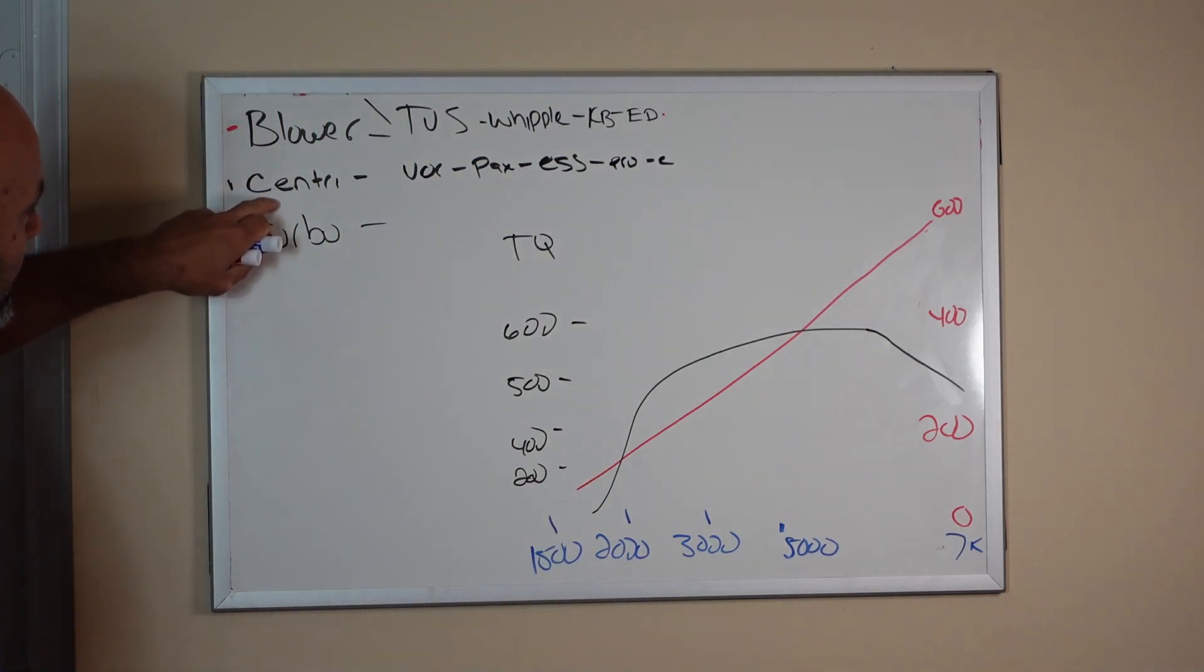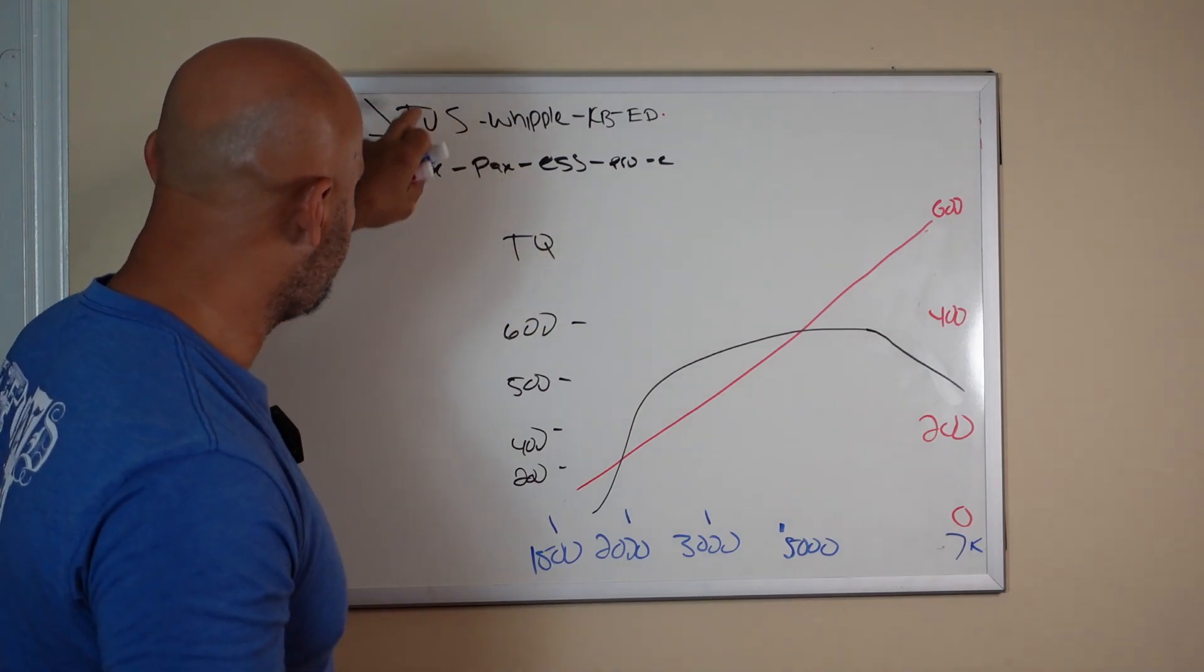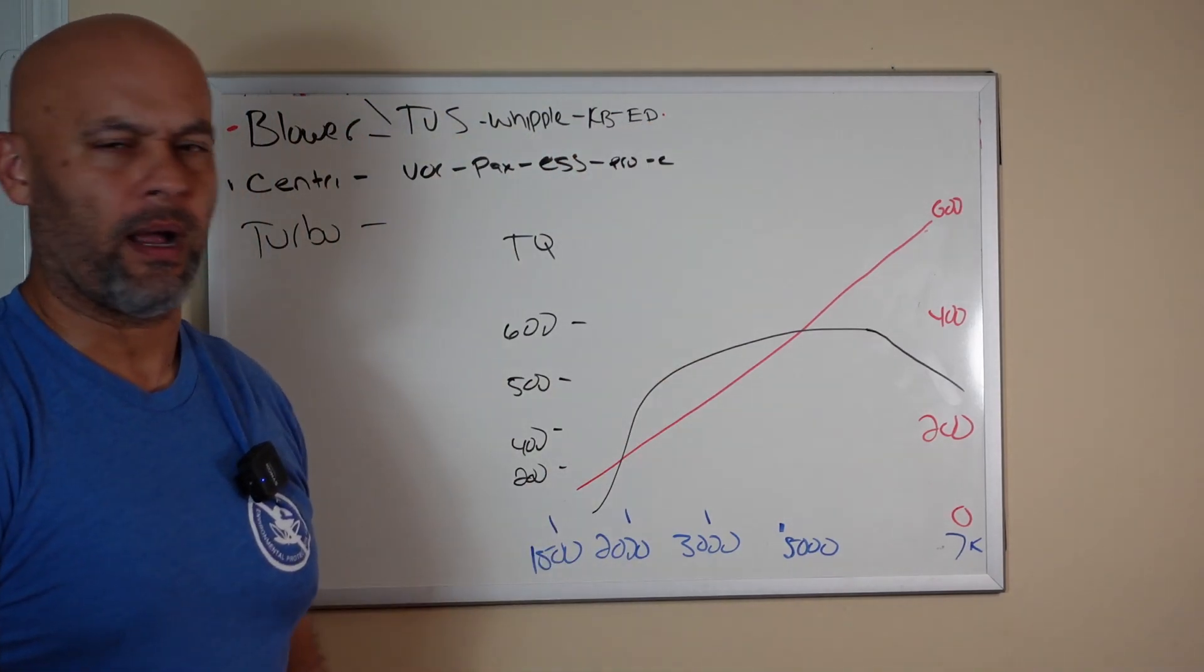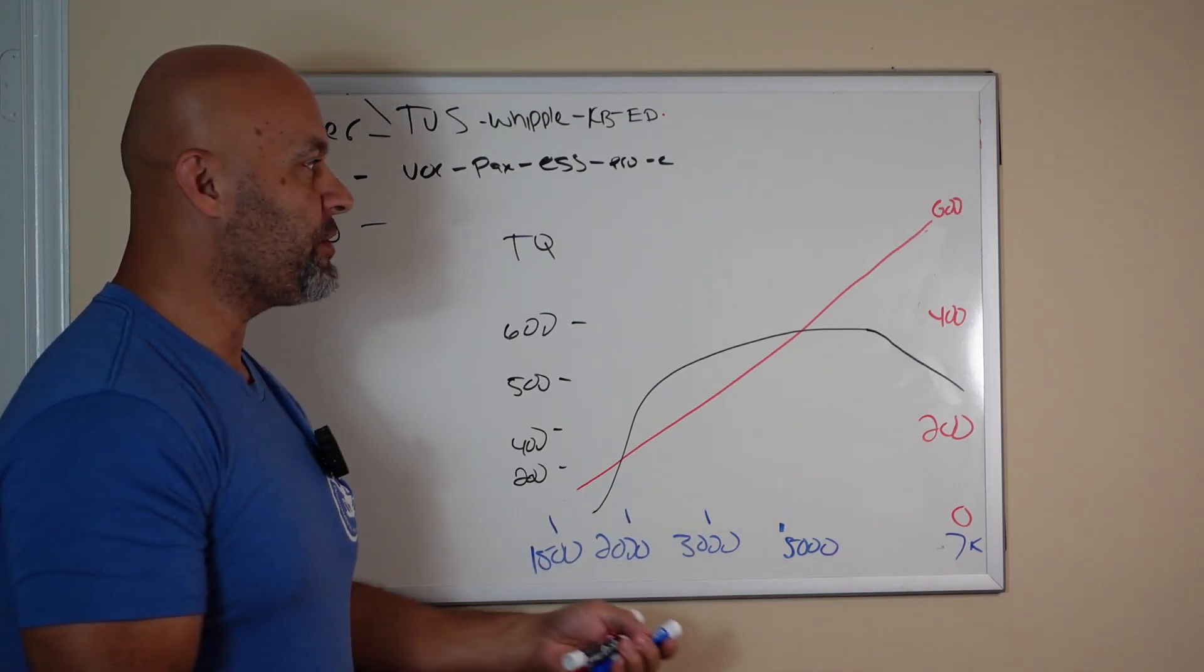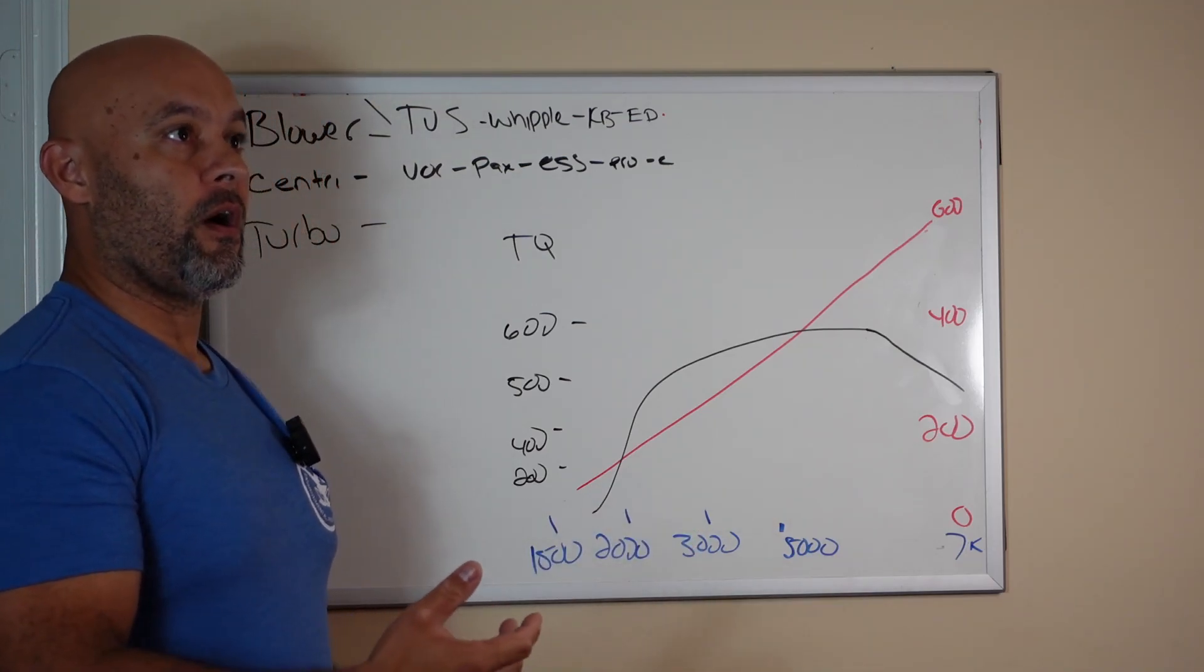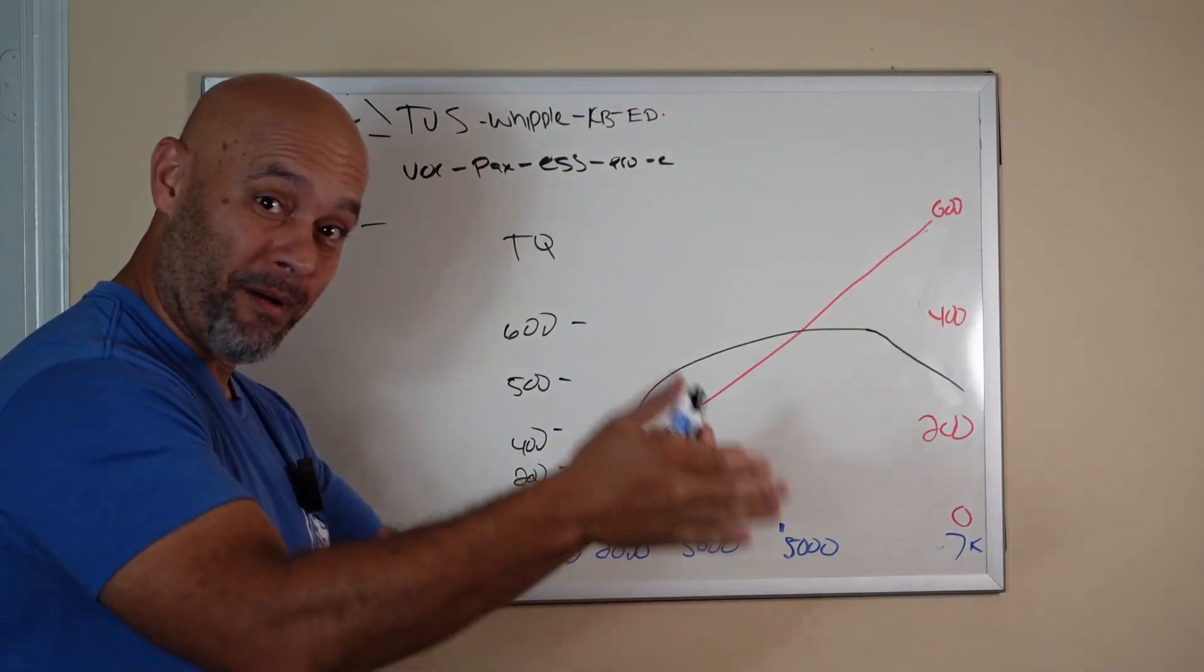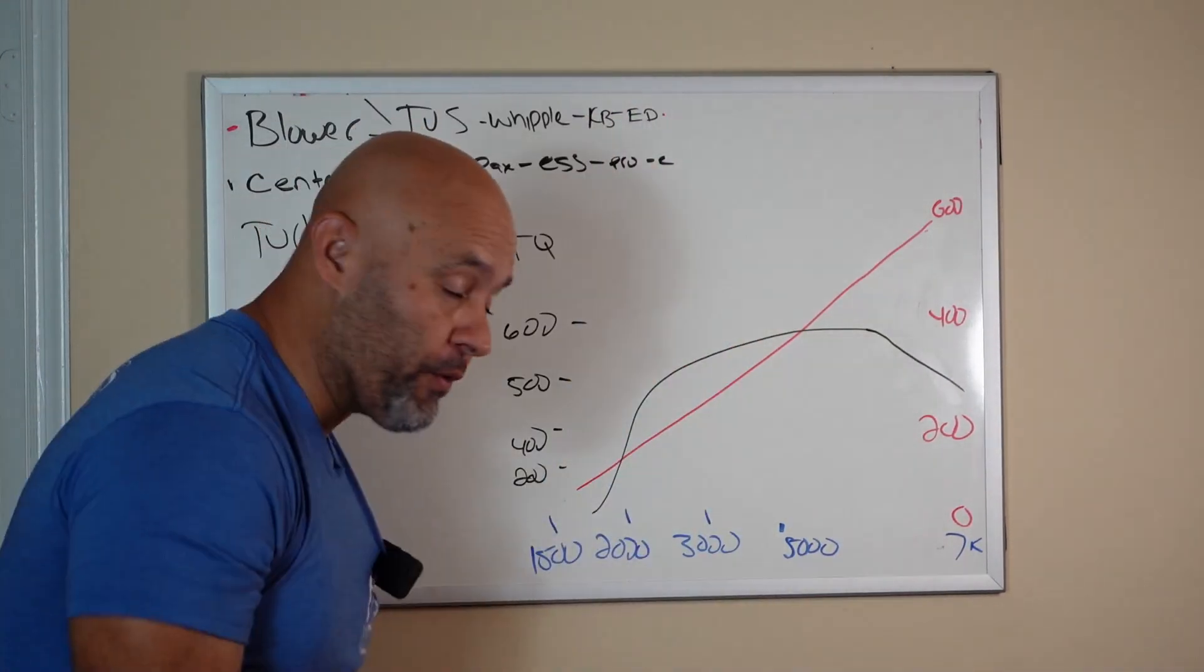So what's one of the biggest complaints I get? Why can't you make a centrifugal feel like a TVS, Whipple, Kenny Bell, or Edelbrock? One is basically a belt-driven turbo.